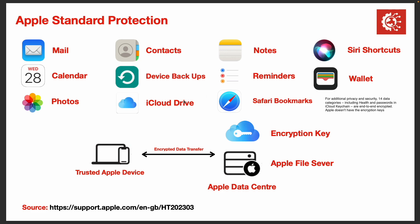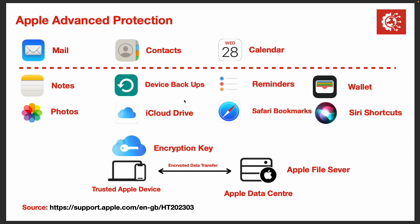The difference between standard and advanced is that mail, contacts, and calendar are stored exactly the same way. I think it's due to technical limitations — they can't get the mail server to run on this level of encryption. So those three apps — mail, contacts, and calendar — are still end-to-end encrypted and encrypted on Apple servers, but Apple does retain the encryption key.